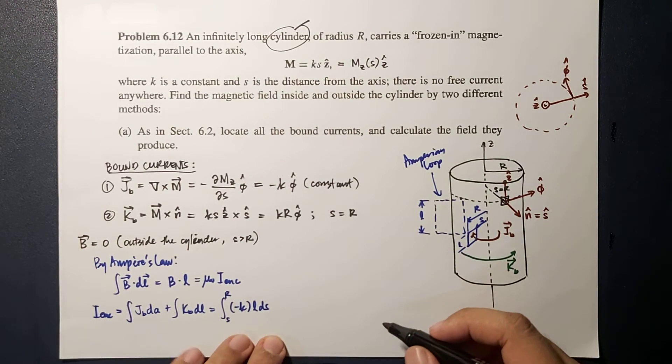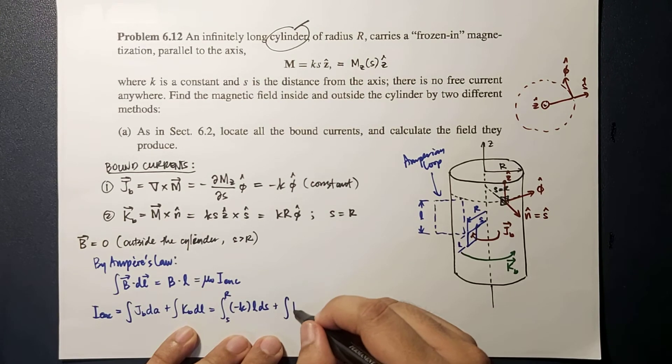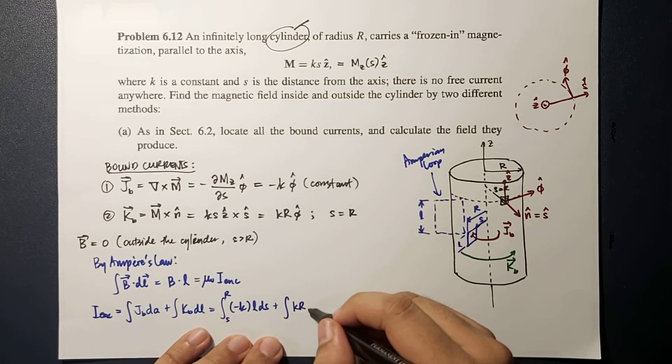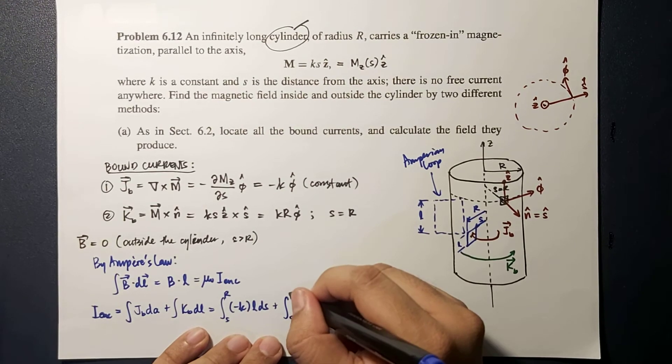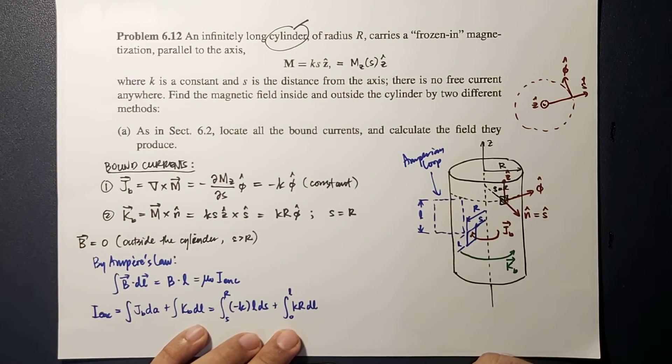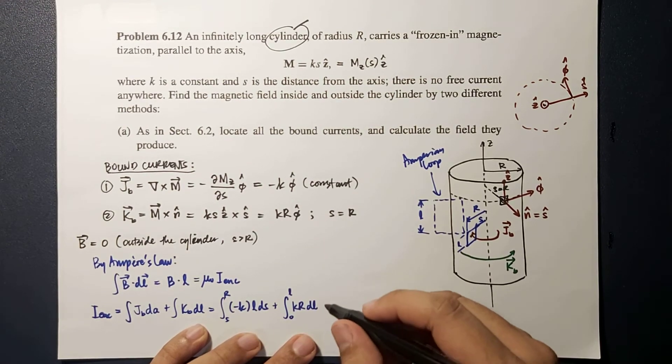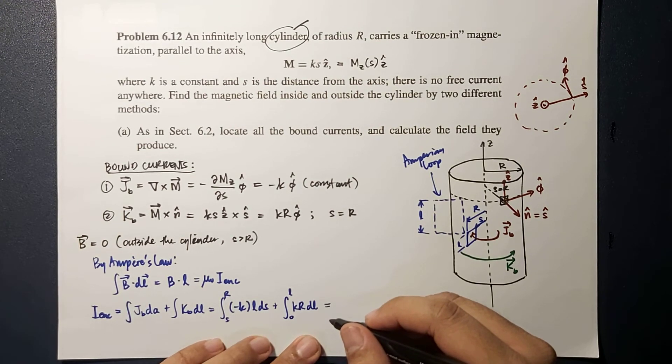So this is now equal to negative K times L dS, where S will vary from S to R, then plus integral of KB, which is KR times dL integrated from 0 to L.